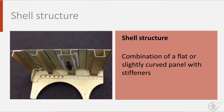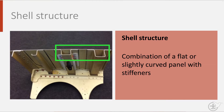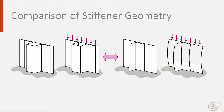A shell structure is defined as a flat or slightly curved sheet with stiffeners. There are many different types and shapes of stiffeners, which allows us to optimize our design. Here we see an L-shaped, a Z-shaped, and two hat-shaped stiffeners. Each stiffener geometry gives rise to different behavior of the shell structure under compression. The hat stiffeners have a higher stability, meaning they have more resistance to buckling than the L-shaped stiffener. They will bulge out on the non-clamped side, as you can see.